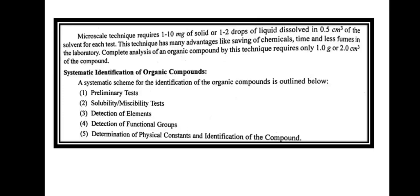There are five steps for the systematic identification of an organic compound. The first step is the preliminary test, the second is solubility and miscibility test, the third is detection of elements, the fourth is detection of functional groups, and the fifth is determination of physical constants and identification of the compound. We will discuss each step in detail.